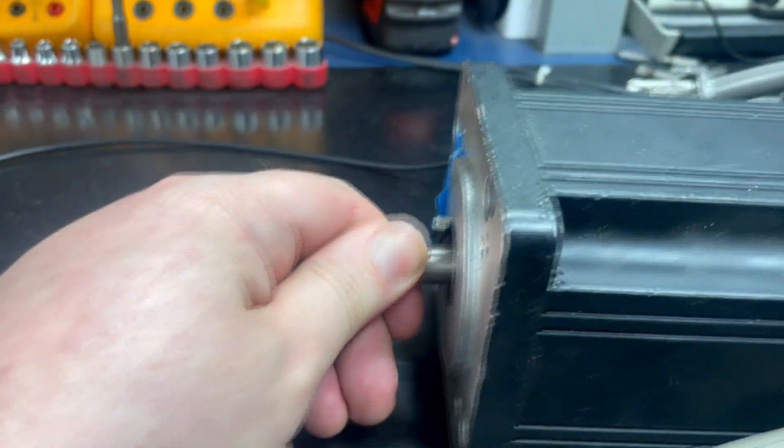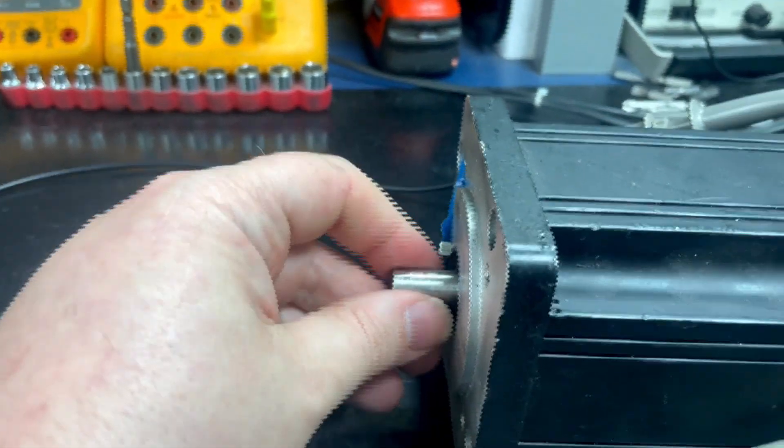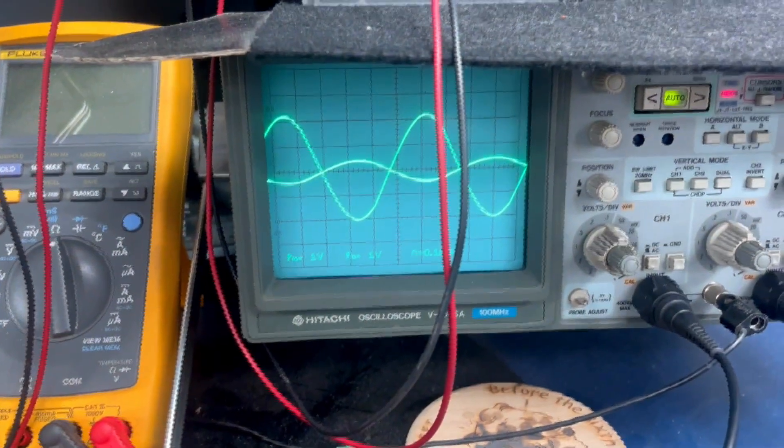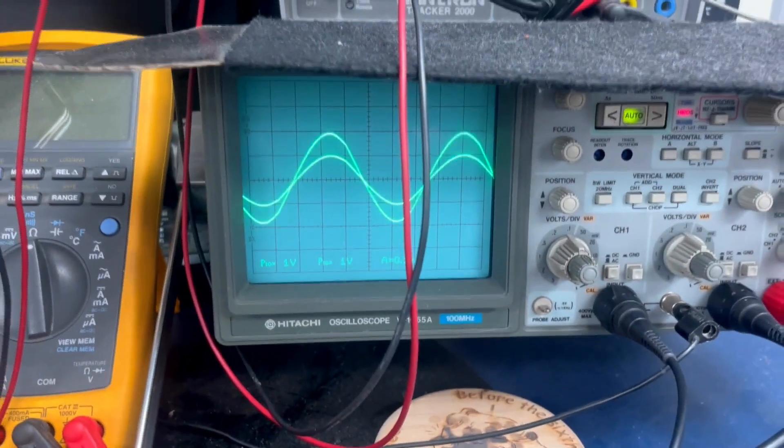As we spin the shaft, we can measure and compare these AC waveforms and look for any faults that should occur during the rotation.